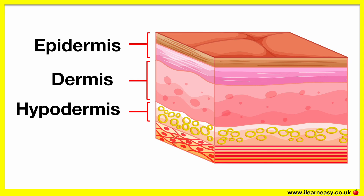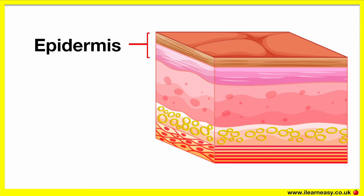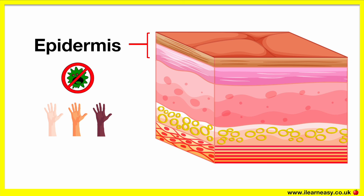The layer below the hypodermis is the muscle. The epidermis is the outer layer and it's made up of mostly skin cells. These cells constantly die and get replaced with new cells regularly. This layer provides a waterproof barrier against microbes. This layer also contains melanin, which determines the colour of your skin. If you have more melanin you'll have darker skin; if you have less melanin you will have lighter skin. Melanin is important as it helps to protect our skin from harmful sun rays.